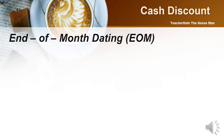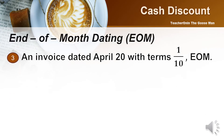The next type of cash discount is end-of-month dating. It shifts the invoice date to the last day of the month so that the discount period or credit period starts after the end of the month. For example, an invoice dated April 20 with terms 1/10 EOM — I'll move the invoice date to the last day of the month, which is April 30.